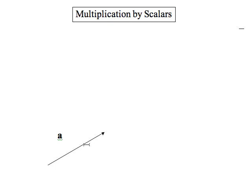For instance, if you have a vector and you multiply it by two, you take a vector and make it twice as long. So you basically stretch it and don't change the direction.